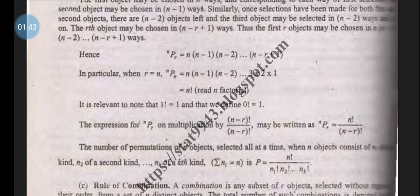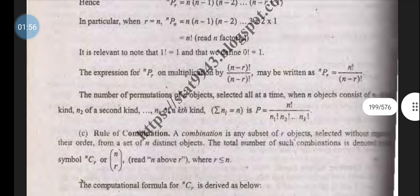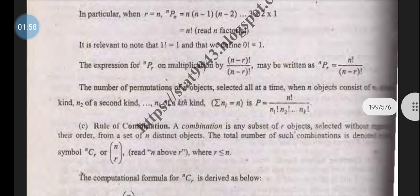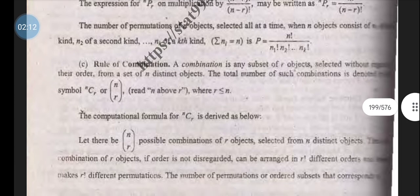So nPr equals n times (n-1) times (n-2) up to (n-r+1). In particular, when r equals n, then nPn equals n times (n-1) times (n-2) times 3 times 2 times 1, which equals n factorial. The expression for nPr can be written by multiplying by (n-r)! over (n-r)! and is written as nPr equals n! over (n-r)!.